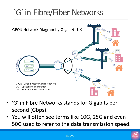In fiber networks, G is used to denote data transmission speed measured in Gigabits per second or Gbps. As speeds increase, we now see 10G, 25G, and even 50G networks.